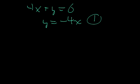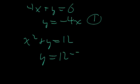And then for our second equation, we're given x squared plus y is equal to 12. I'm just going to move this x squared to the other side. So we have y is equal to 12 minus x squared. I'm going to call that equation 2.